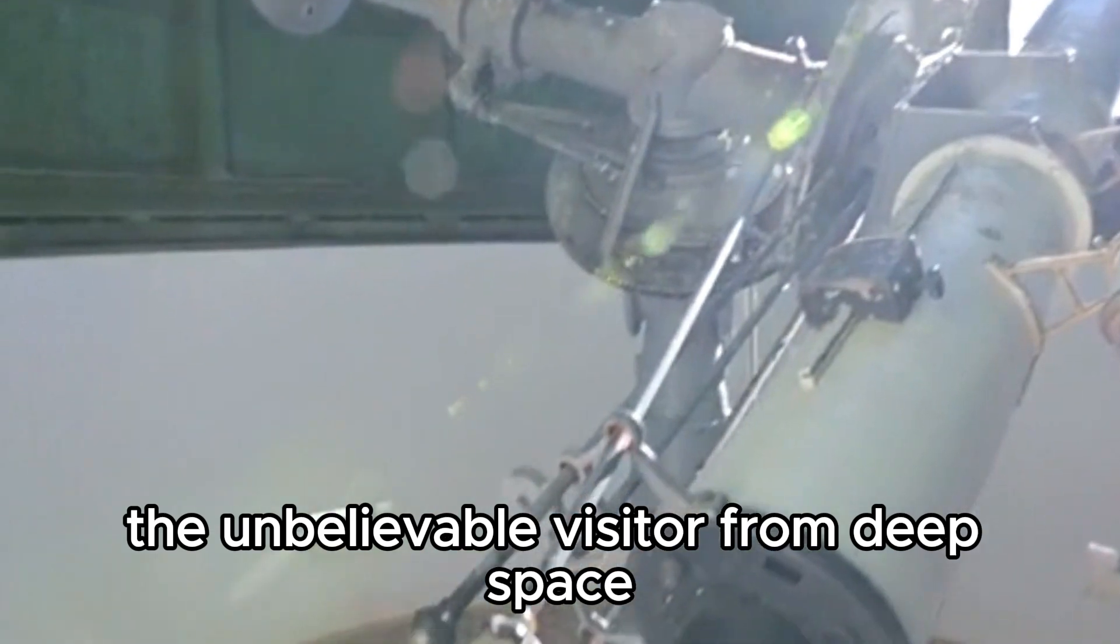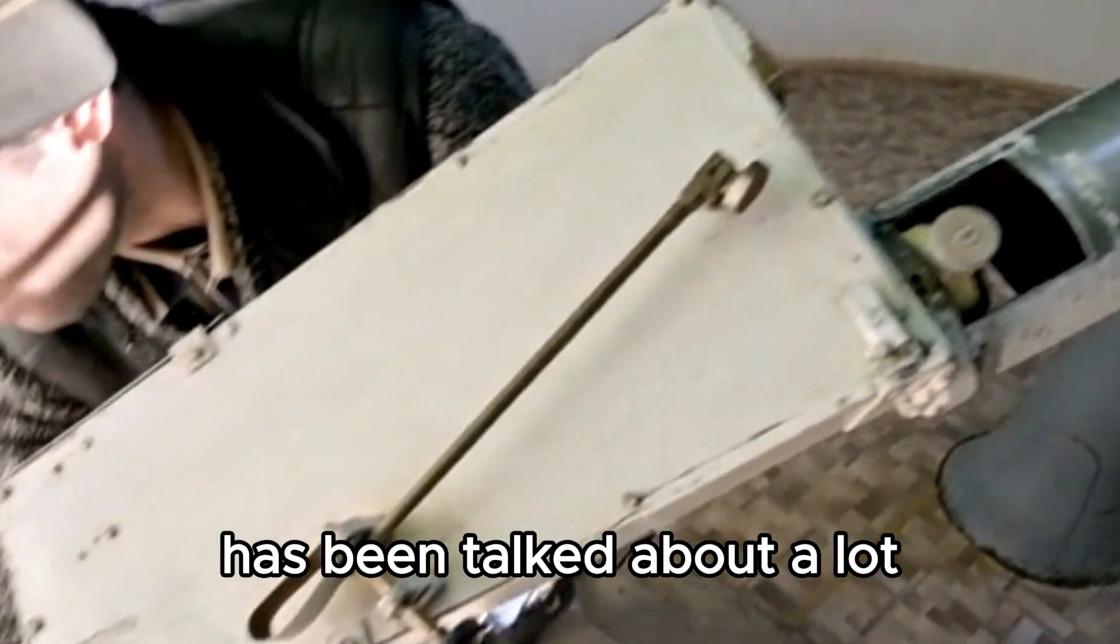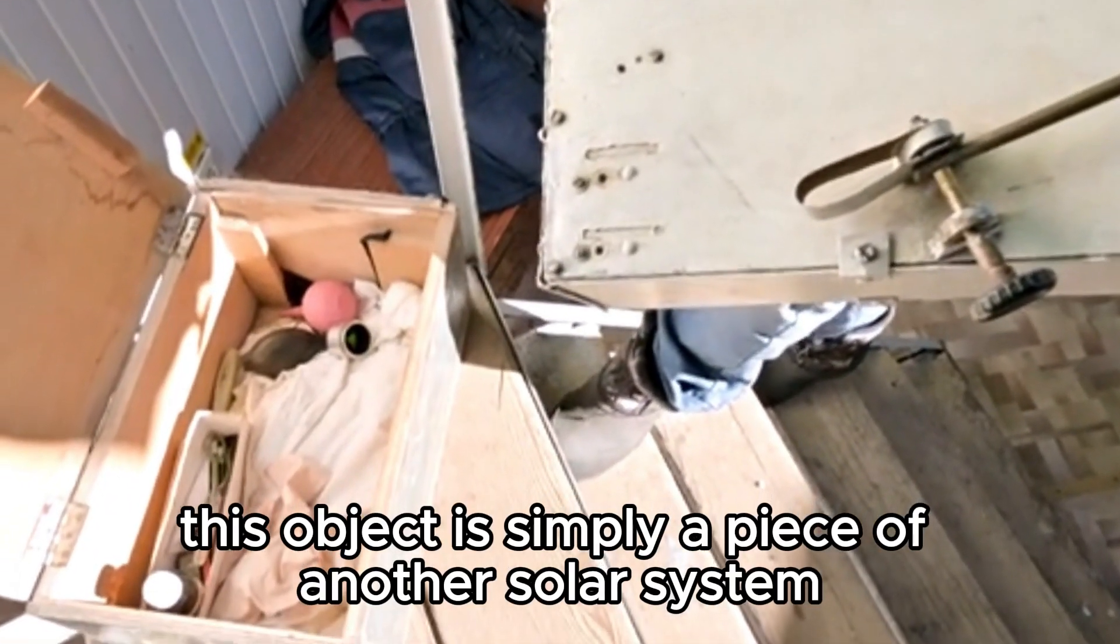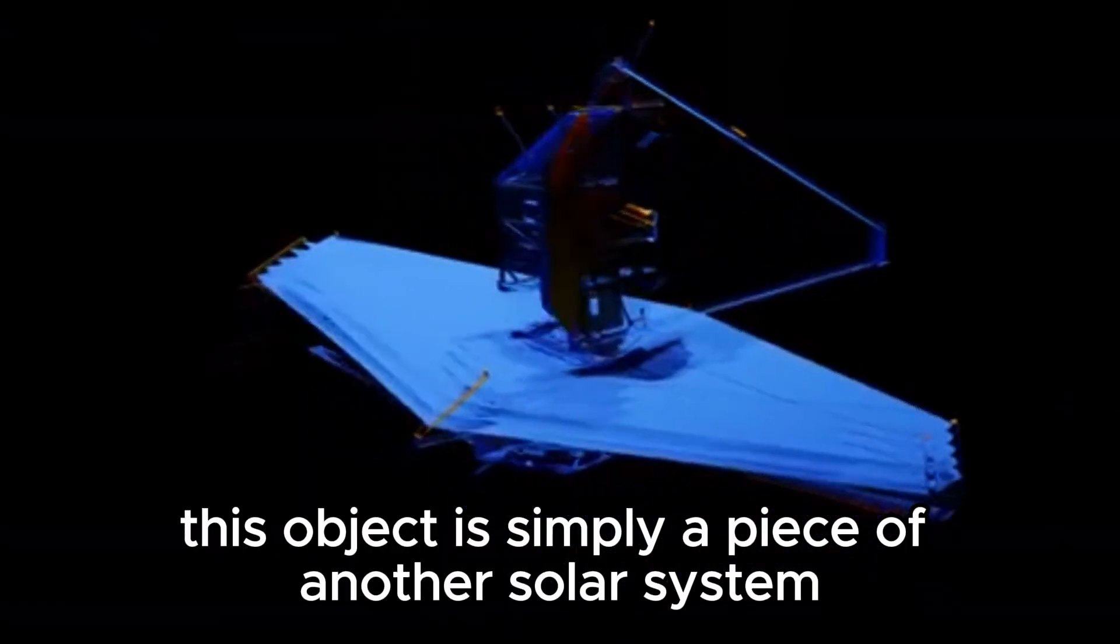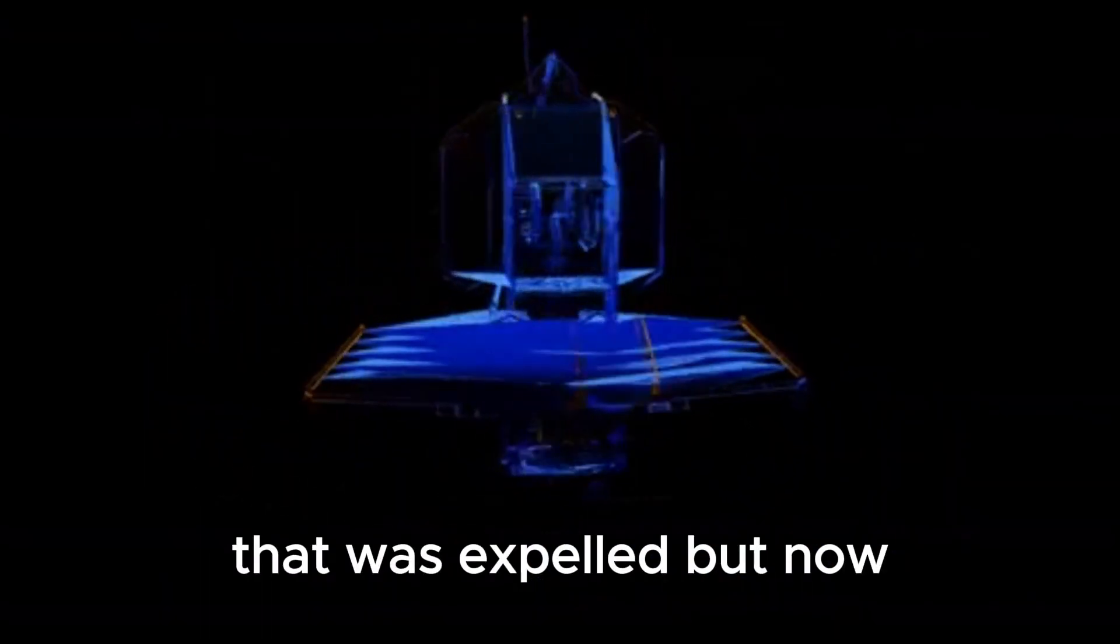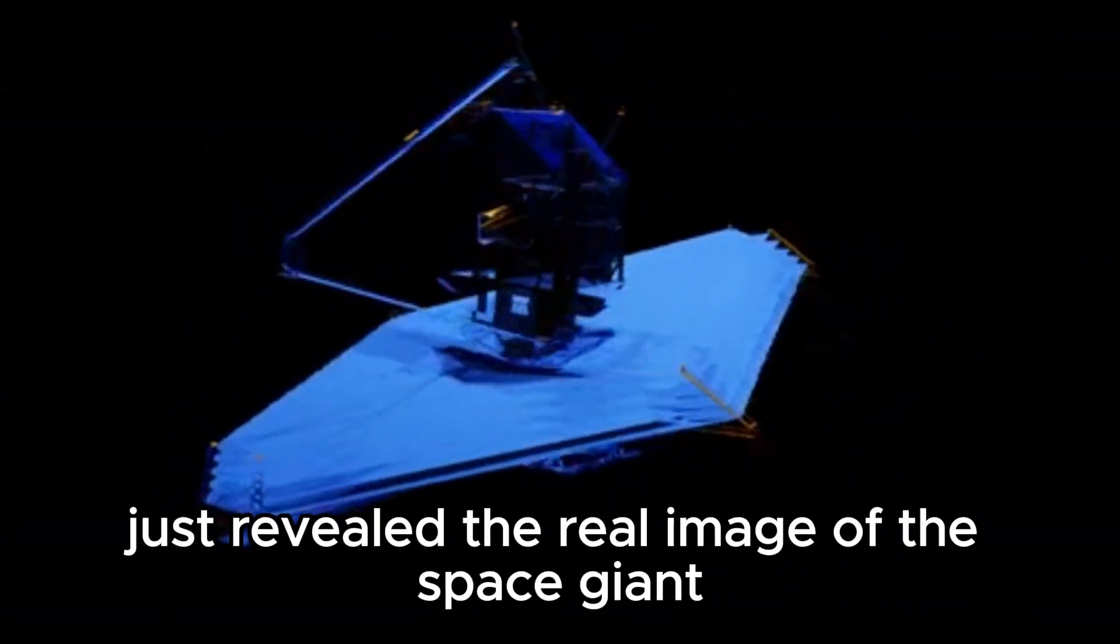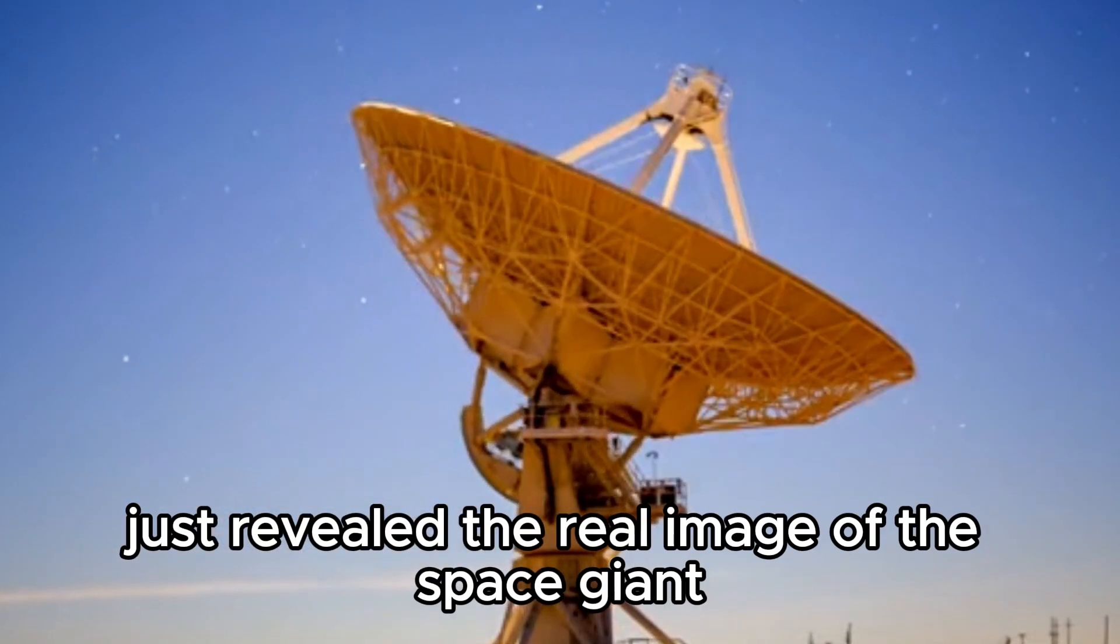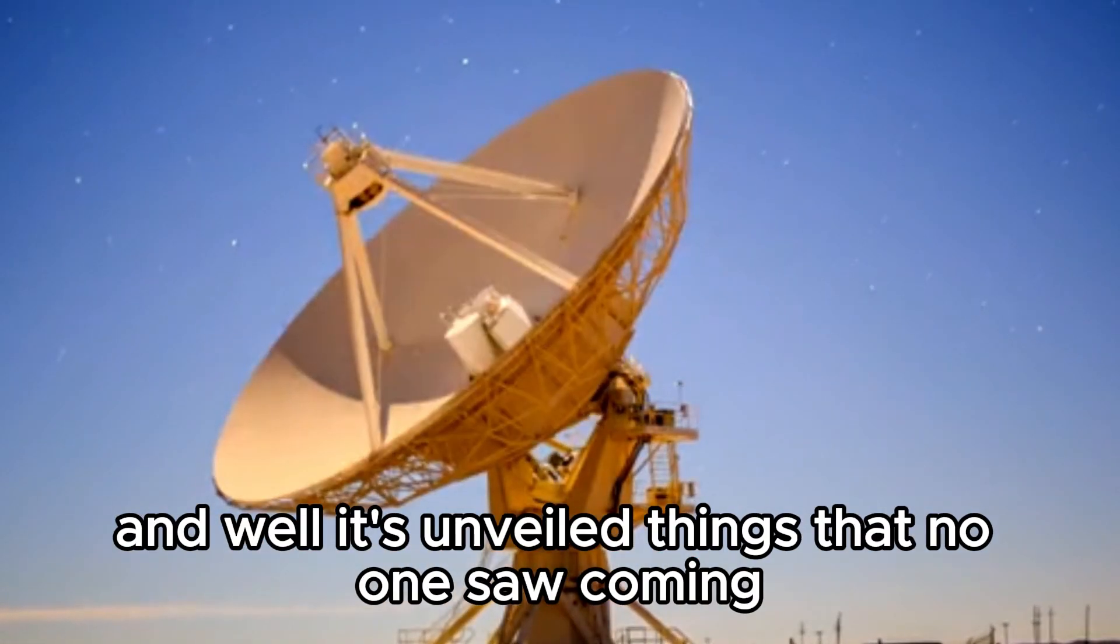The unbelievable visitor from deep space has been talked about a lot for the past few weeks. This object is simply a piece of another solar system that was expelled. But now the James Webb telescope just revealed the real image of the space giant and it's unveiled things that no one saw coming.